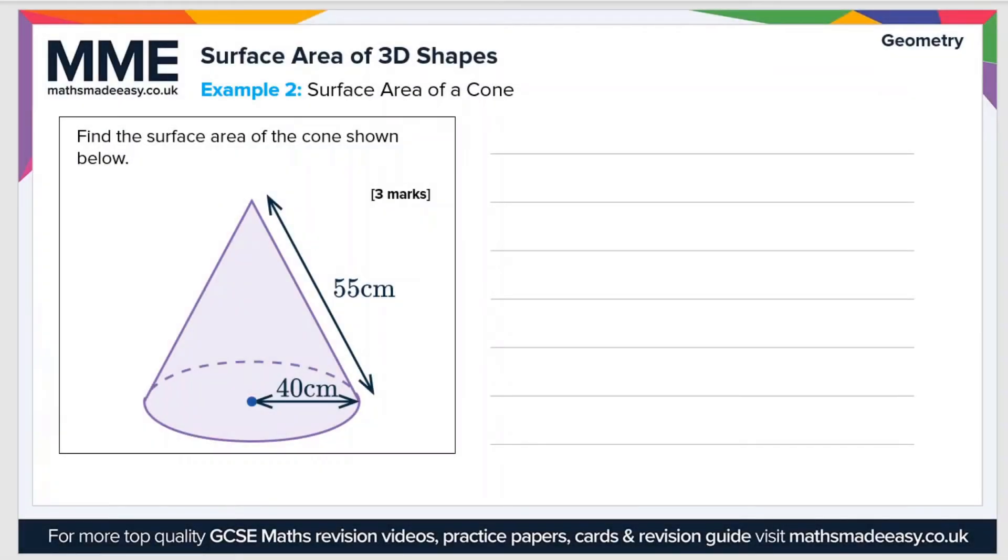So on to example two. This is the surface area of a cone. So find the surface area of the cone shown below. Well, the formula we need for the area of a cone is pi r squared, so that's the area of the circular base, plus pi r L. And that's the area of the slanted or curved face.